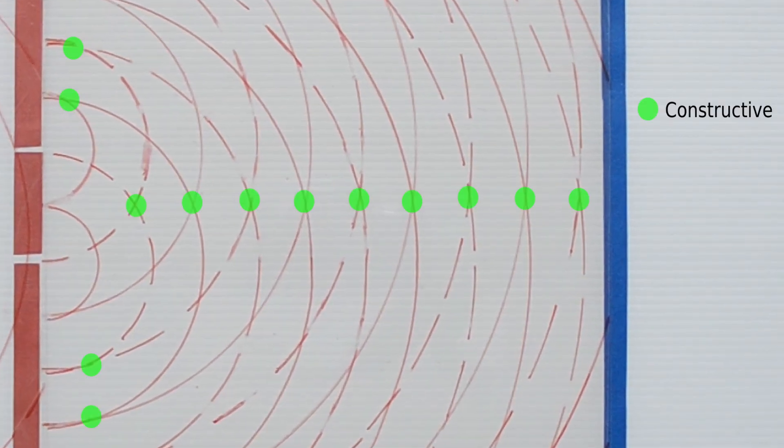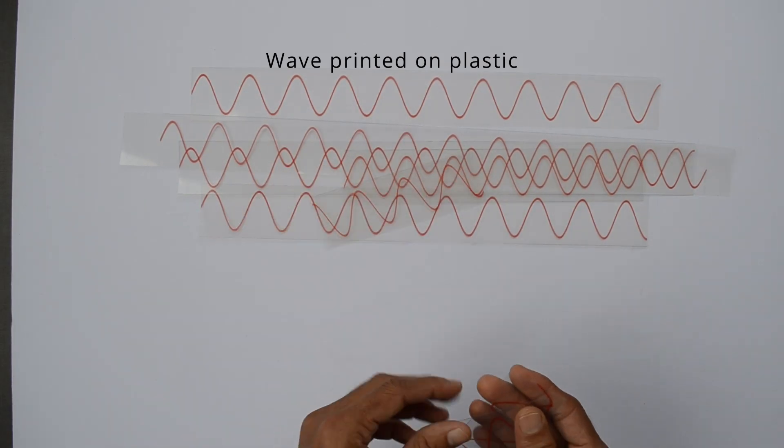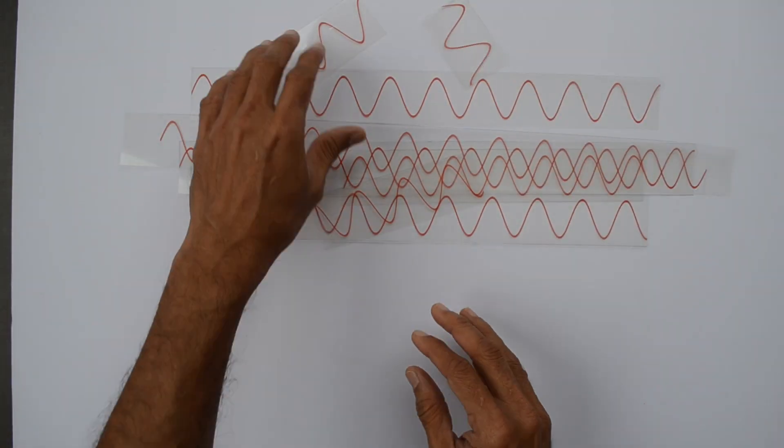This results in a constructive or destructive interference at various locations. Let us use these plastic scraps with waves printed on them.